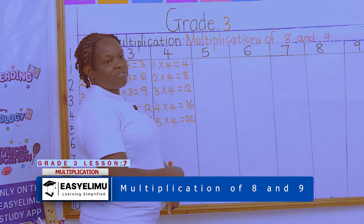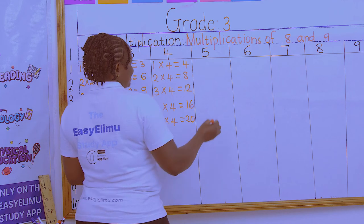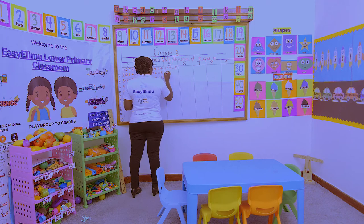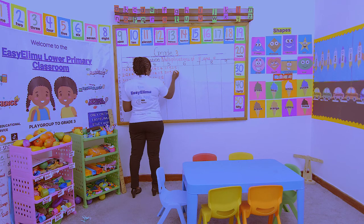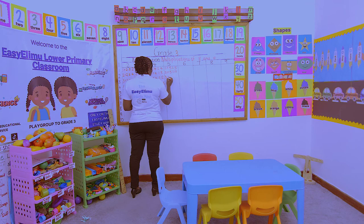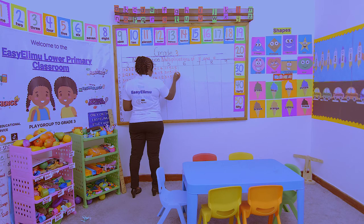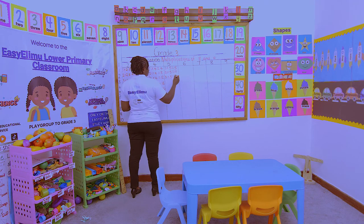The multiplication table for number 5 is the easiest. 1 × 5 = 5 — any number times 1 is that number. 2 × 5 is 5 + 5 = 10. We are counting in fives.